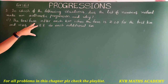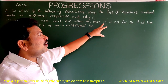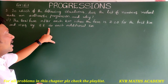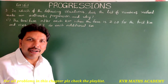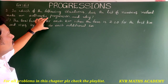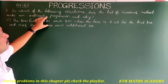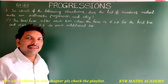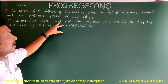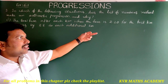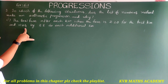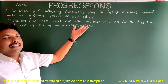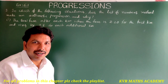Part (i): The taxi fare after each kilometer, when the fare is rupees 20 for the first kilometer and rises by rupees 8 for each additional kilometer. We have to check whether this given data forms an arithmetic progression or not.